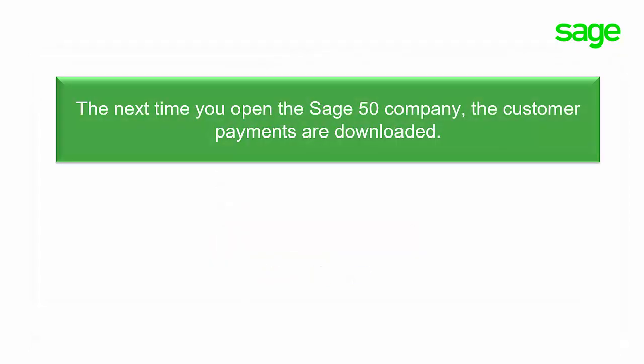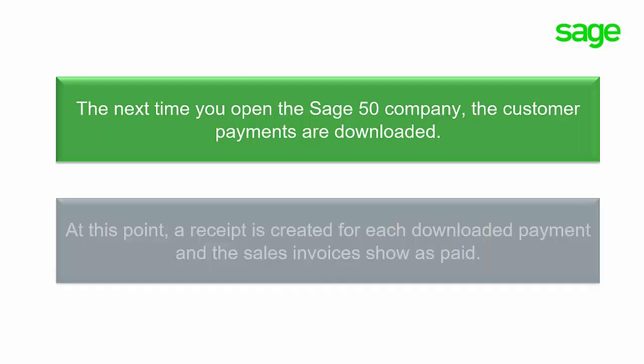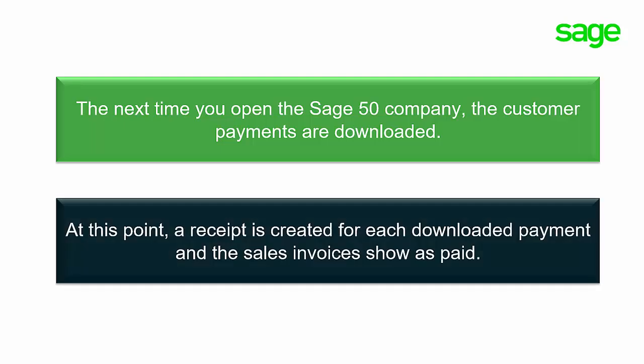The next time you open the Sage 50 Company, the customer payments are downloaded. At this point, a receipt is created for each downloaded payment, and the sales invoices show as paid.